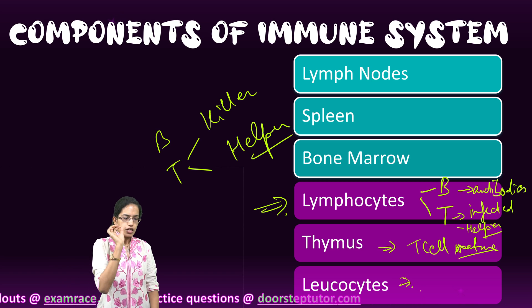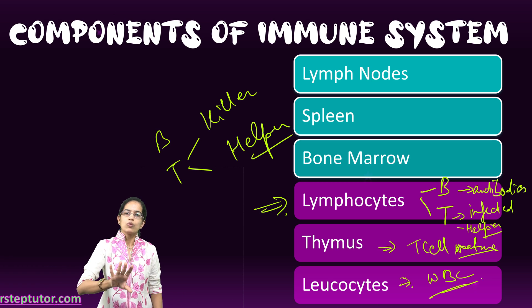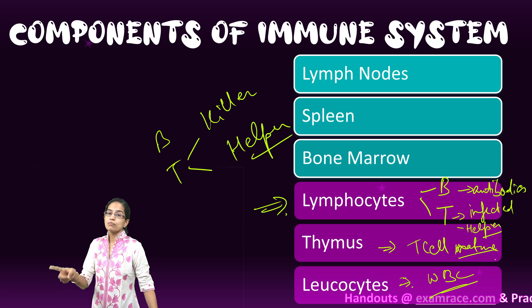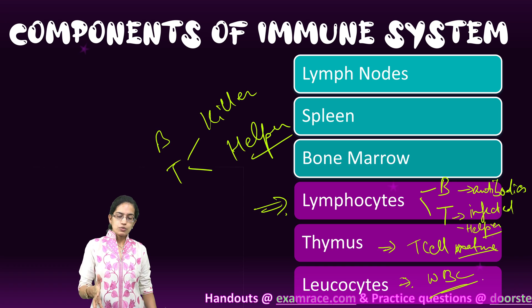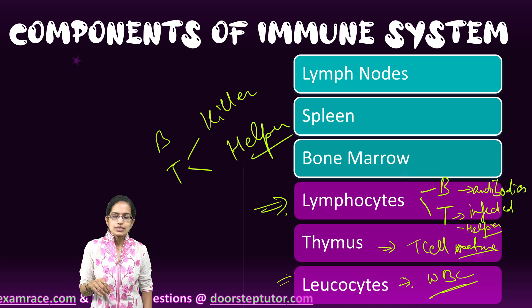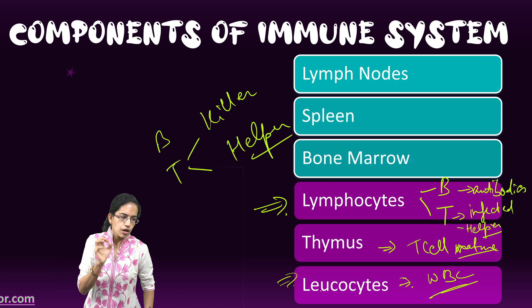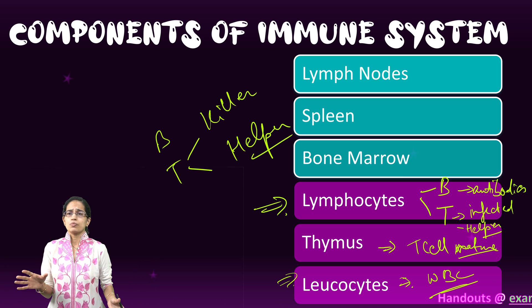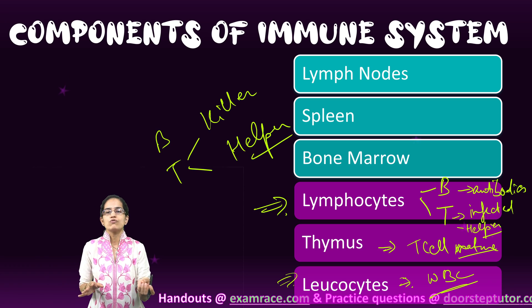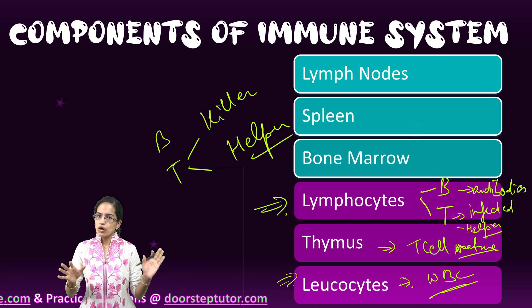Leukocytes are disease-fighting white blood cells that eliminate or remove pathogens. They are an important component of our innate immune response system. The innate immune response system includes cells such as basophils, mast cells, and eosinophils — all of which are part of the immune response system.